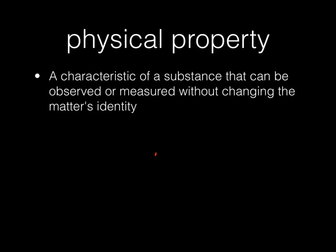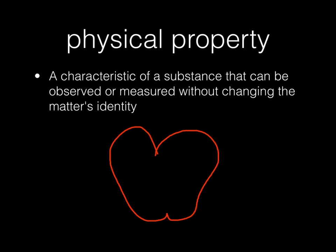A physical property is a characteristic of a substance that can be observed or measured without changing the matter's identity. For example, let's take a look at this apple. We see that the apple is red and it has a green leaf on it. Those are physical properties.